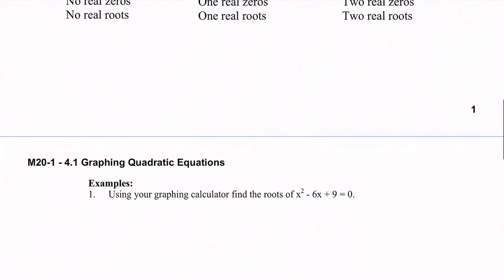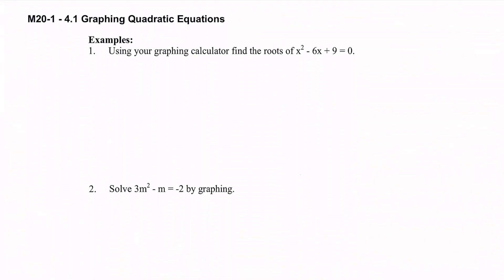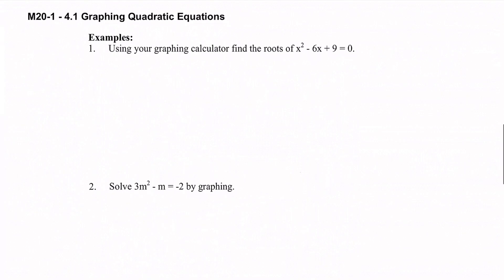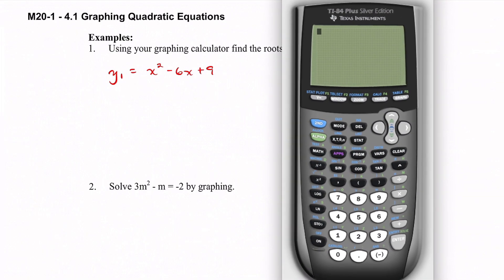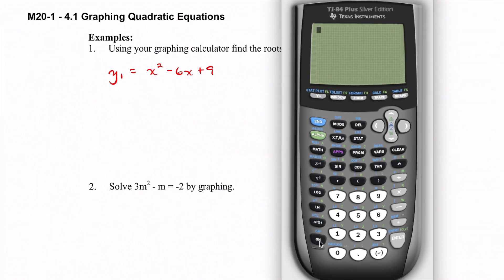On to our examples. Number one says: using your graphing calculator, find the roots of x squared minus 6x plus 9 equals 0. What we're going to do is enter the left side into y1 on our calculator. So y1 is going to be x squared minus 6x plus 9. We'll pull up the calculator and go into y equals, then type that in.